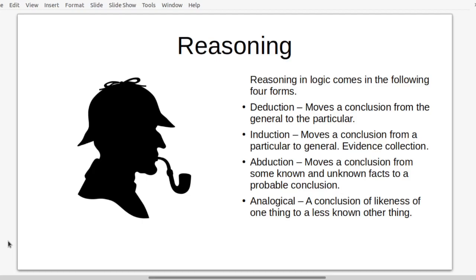Abduction is technically more of what Sherlock Holmes would do — moving a conclusion from known and unknown facts to a probable conclusion, taking the highest probability of what can be known. As Sherlock Holmes would say: once you've removed the impossible, whatever's left, no matter how illogical, must be the case. The next form is analogical reasoning, which is a conclusion of likeness — one thing as a less-known other thing. Comparison is a big deal in analogical reasoning, and it involves a lot of metaphor and analogy.